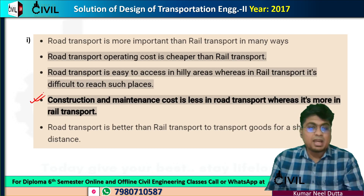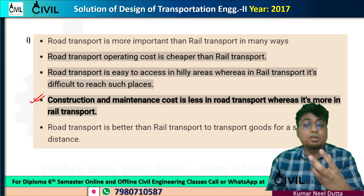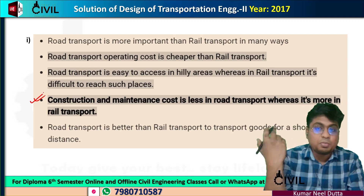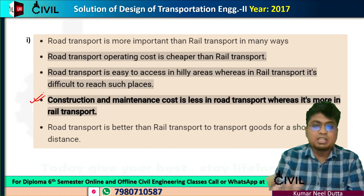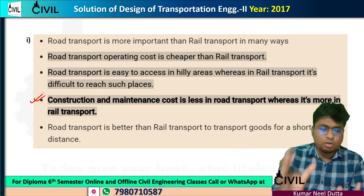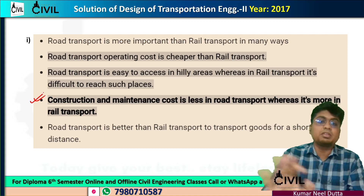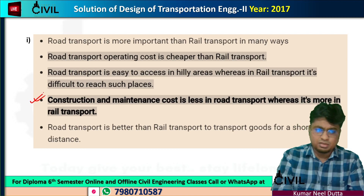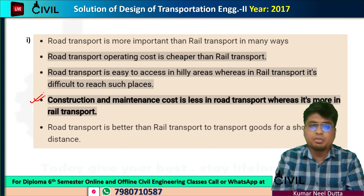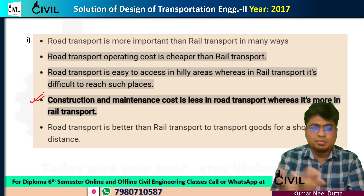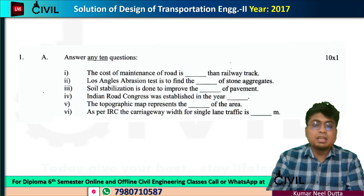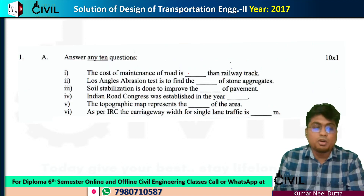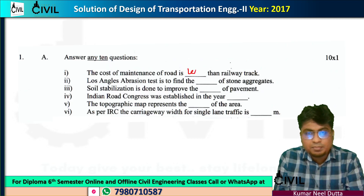The railway tracks require steel sections, manganese steel, pre-stressed concrete sleepers, electric wires, masts, and balancing structures. So the cost of maintenance is less for roads compared to railway. The cost of road maintenance is less than the cost of railway maintenance.